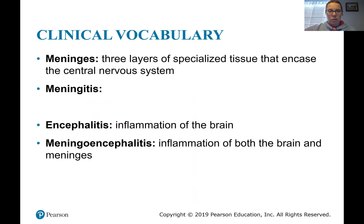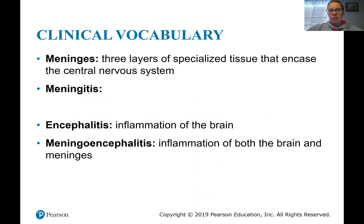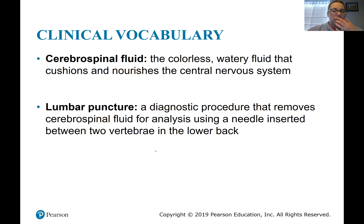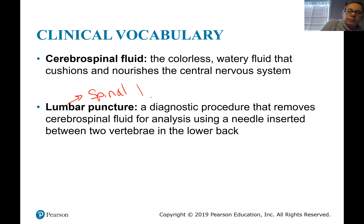So just a few terms here with the nervous system. The meninges are basically a layer of tissue that surrounds the brain and the spinal cord. Meningitis is inflammation of the meninges. Encephalitis is inflammation of the brain. Meningoencephalitis is infection of the brain and the meninges. Cerebrospinal fluid is basically the fluid that cushions the central nervous system. You may have heard of a spinal tap, also called a lumbar puncture, where they take a long needle in and remove some fluid for diagnostic tests.